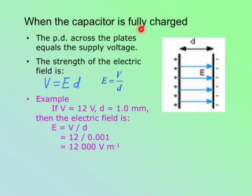When the capacitor is fully charged, the potential difference across the plates equals the supply voltage. So if the supply voltage of the battery is 6 volts, then the potential difference across the plates is also 6 volts.